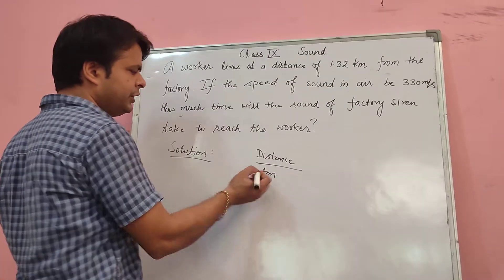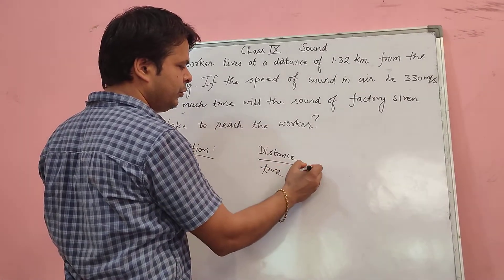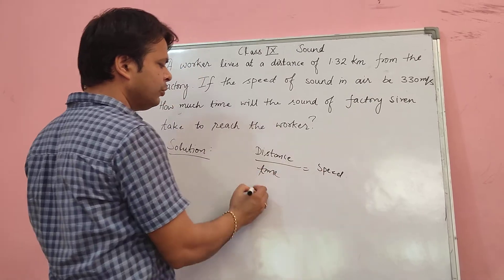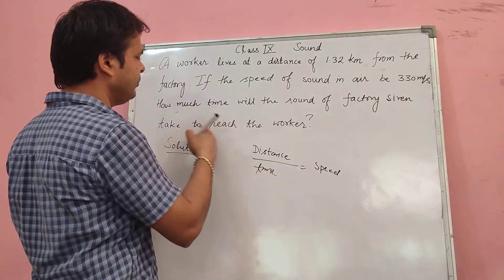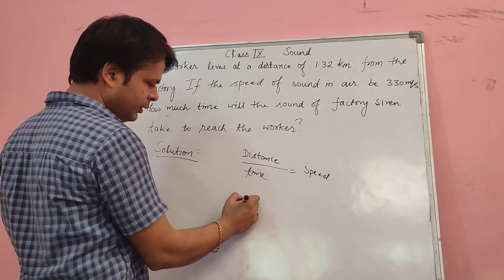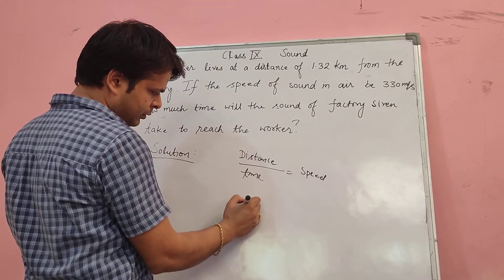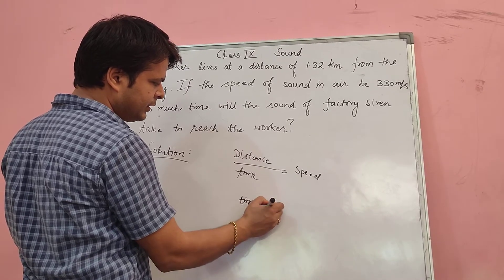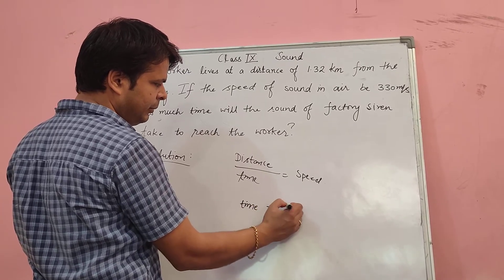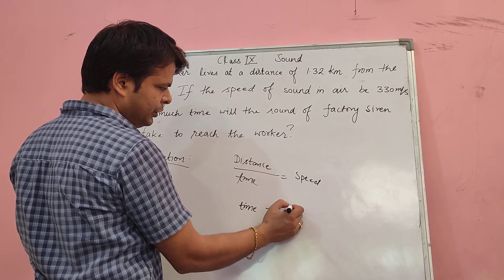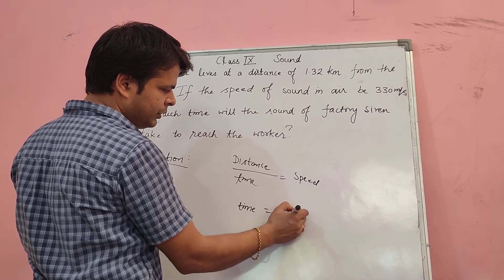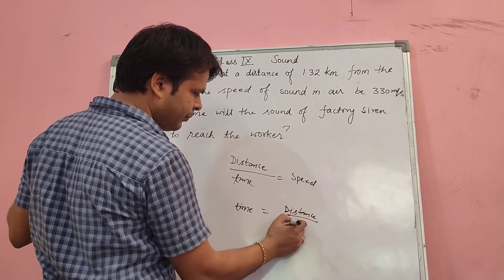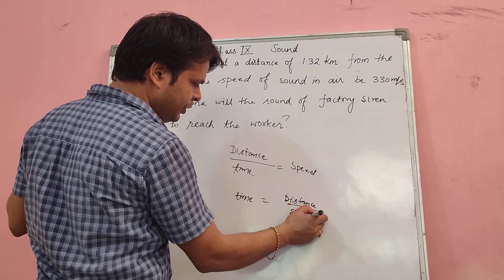The solution is: distance divided by time equals speed. We have to find the time. So, time can be written as time is equal to distance upon speed.